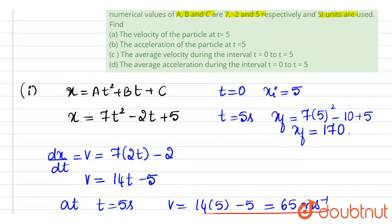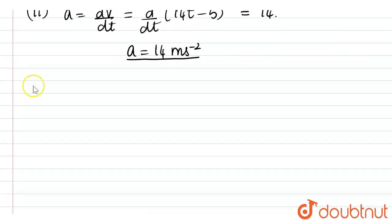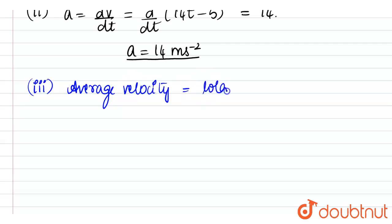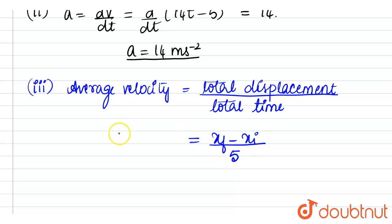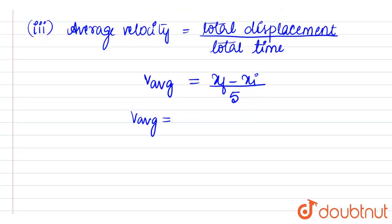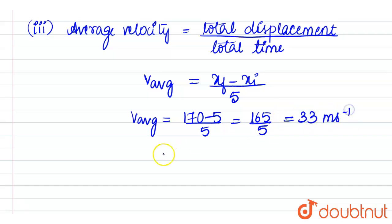In the third part of the question, they ask us to find average velocity during the interval t equals 0 to t equals 5. We know that average velocity is total displacement divided by total time. Displacement can be found as the change in position. So total displacement is final position minus initial position divided by time, which is 170 minus 5 divided by 5, which is 165 divided by 5, equal to 33 meters per second.